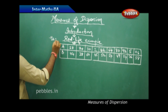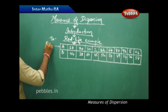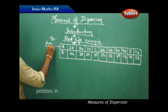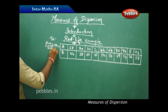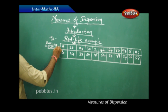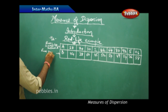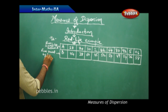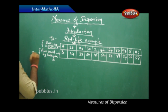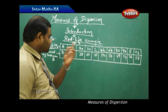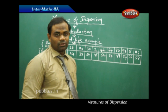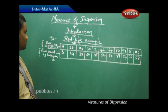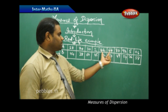For example, consider a problem where the first row gives runs scored by batsman A and the second row gives runs scored by batsman B across 10 international matches — matches 1 through 10 — in which each batsman has scored a different set of scores in each of the 10 matches.